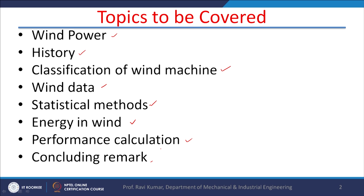In India, wind energy has limited sources because India as a subcontinent is surrounded by ocean on three sides. Near these ocean boundaries and somewhere in central India, there is a possibility of wind power. So the possibility of wind power is limited in our country, but it is another non-conventional energy source.